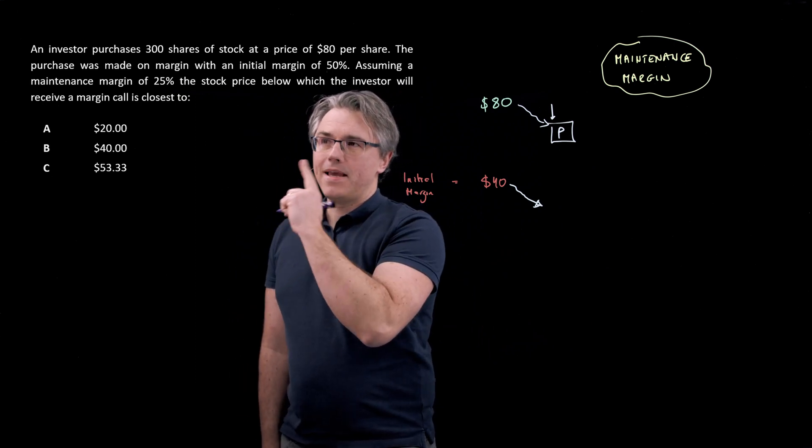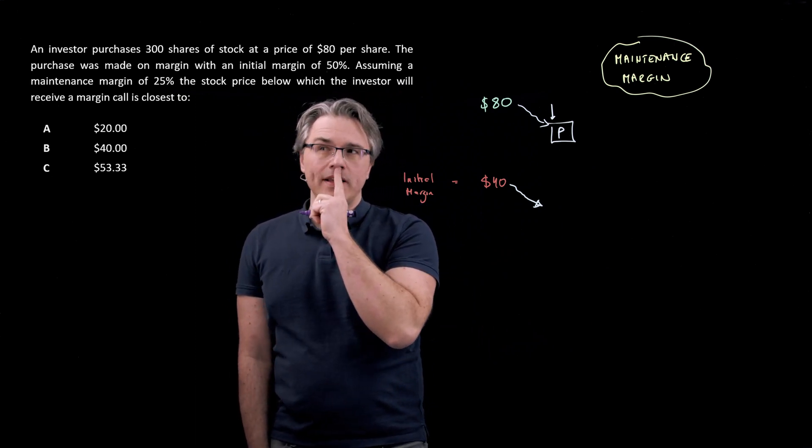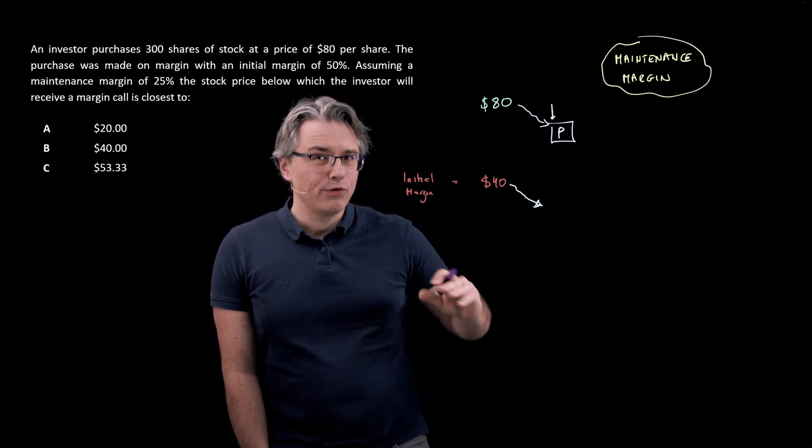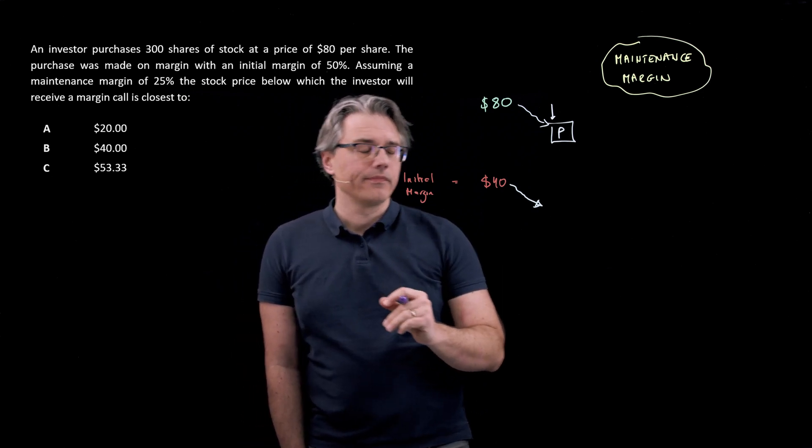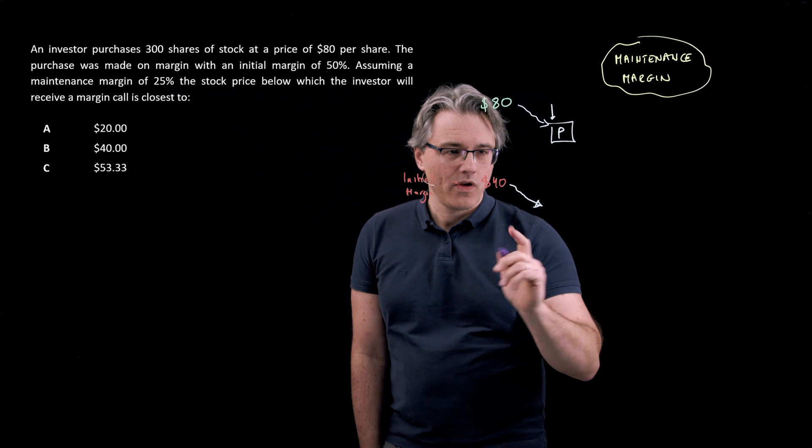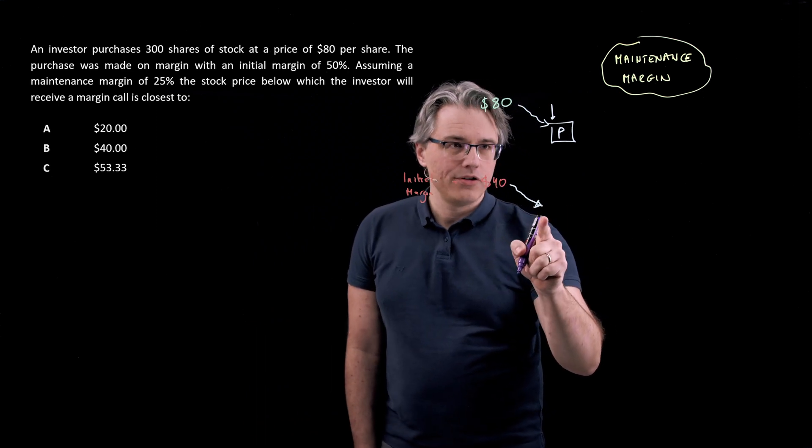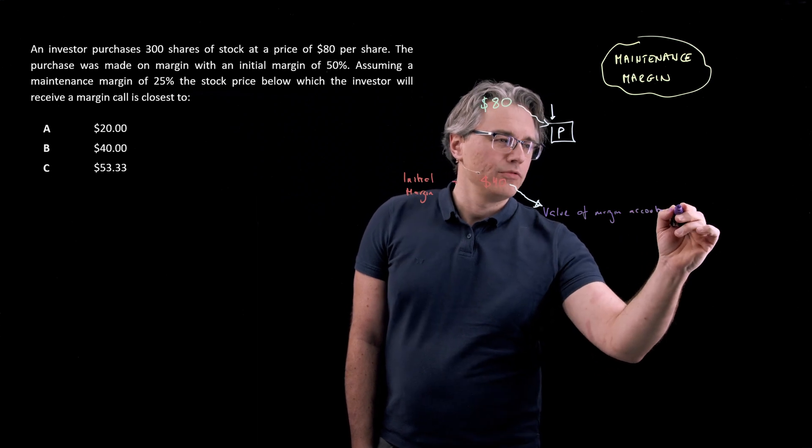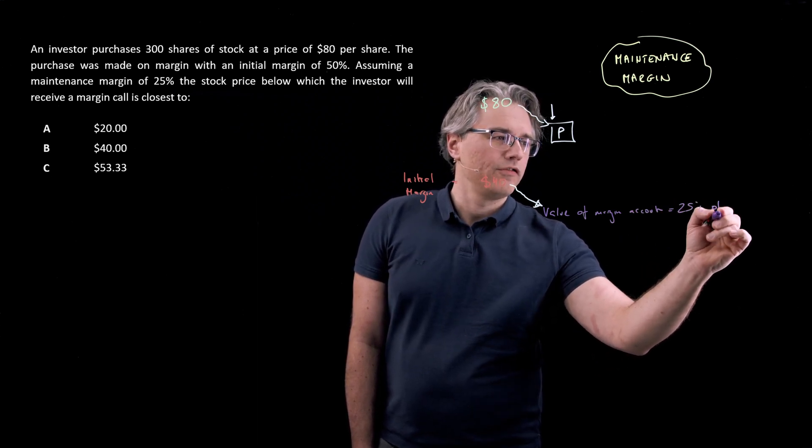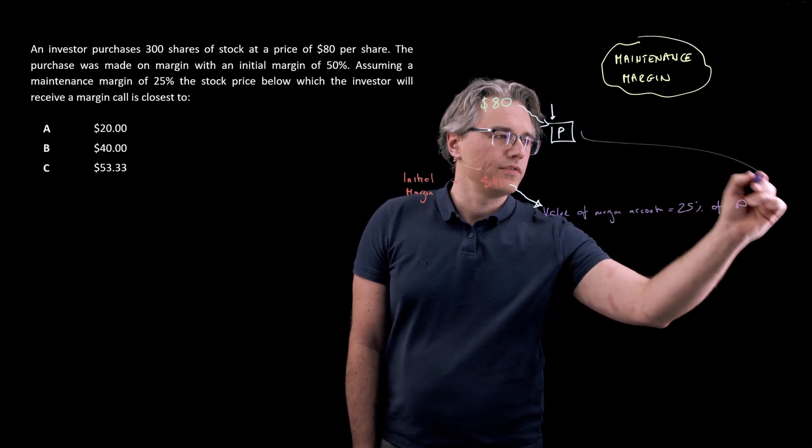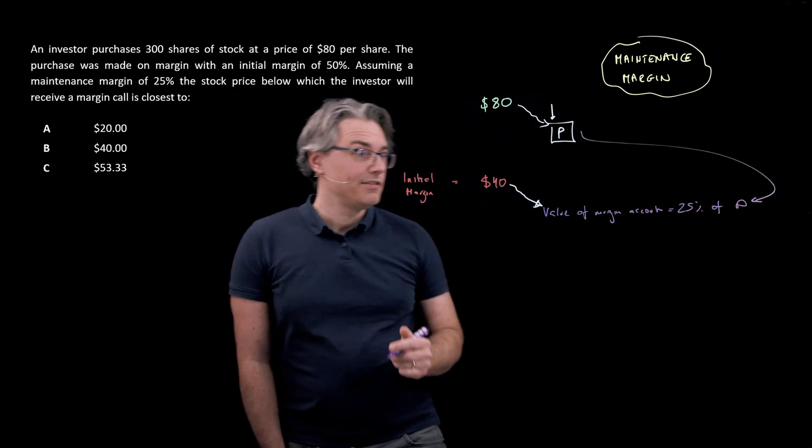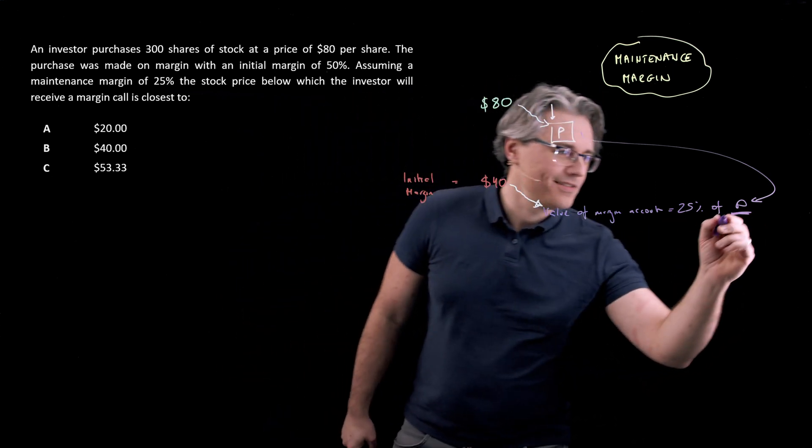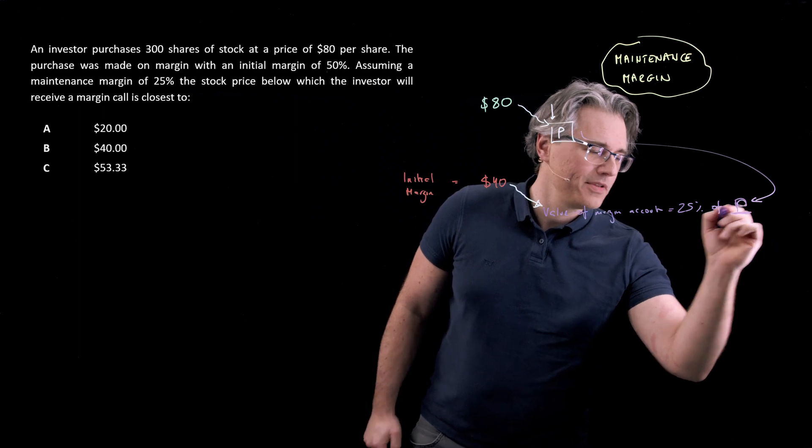Well, we're told that the maintenance margin is 20%, sorry, 25%. So you're going to get a request for additional margin, for additional collateral from the broker, if the value of the margin account drops to a level where it is equal to 25% of the current price of the security. And we need to find what that price of the security is, what the level of P is. That's going to be our mathematical problem.